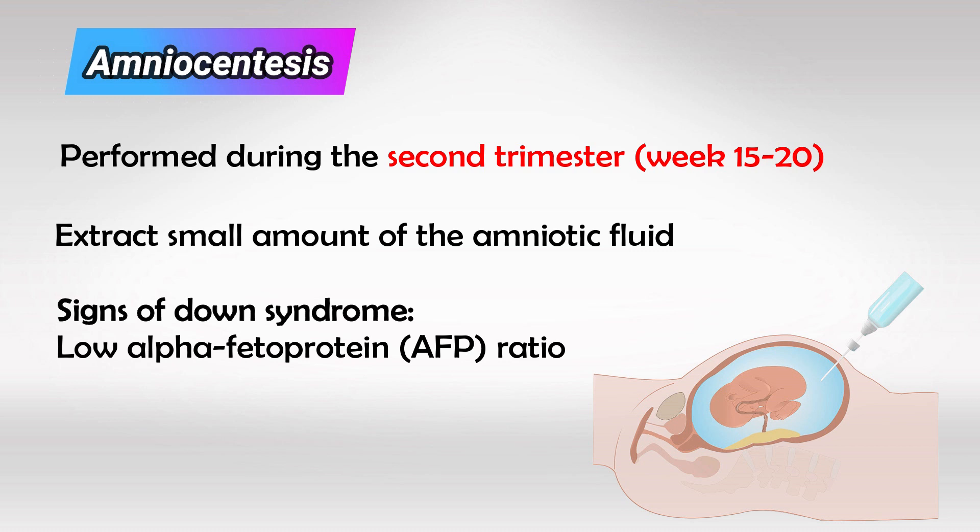If the baby is already delivered, you can simply take a blood sample and analyze the karyotype looking for features of Down syndrome.